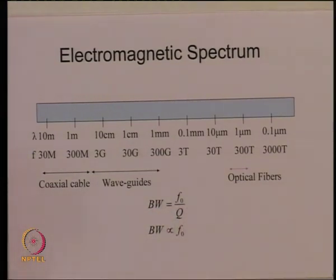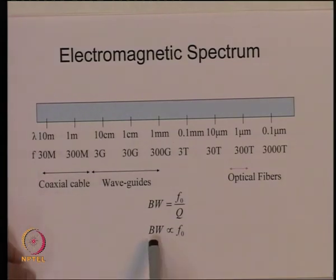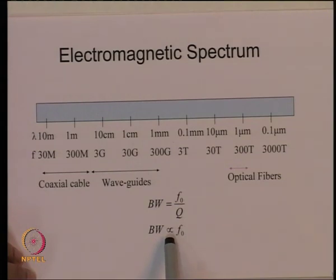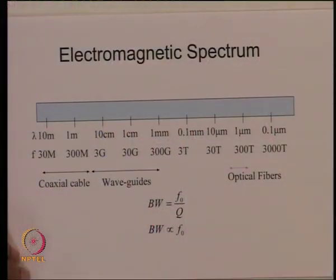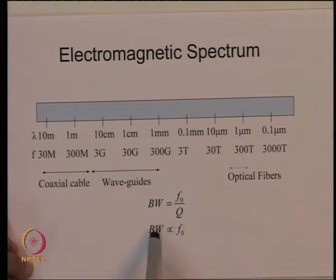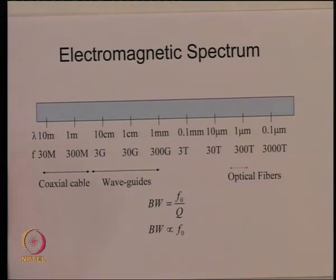Since the quality factor is more or less independent of operating frequency, the bandwidth required is proportional to the operating frequency. If I want to send more and more information, I require larger bandwidth, and since bandwidth scales proportionally with operating frequency, this is precisely why communication started at low frequencies and as bandwidth demand increased, we moved to higher and higher frequencies.